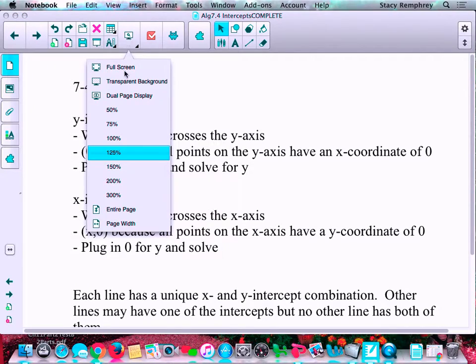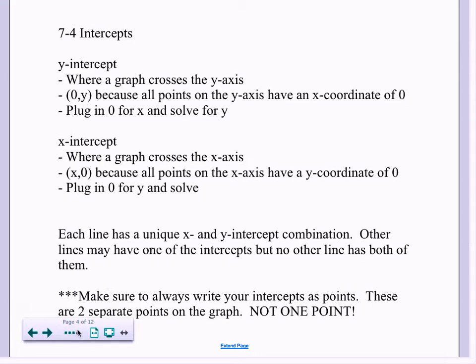Okay, here we have the notes on intercepts, which we started to talk about a bit in class. We didn't have quite as much time as I wanted to. But you should have gotten that the y-intercept is where a graph crosses the y-axis. It is going to be all the points on the y-axis are (0, y), because every point on the y-axis has an x-coordinate of 0. If you think about it, you're not going left or right at all, you're only going up or down on the y-axis.